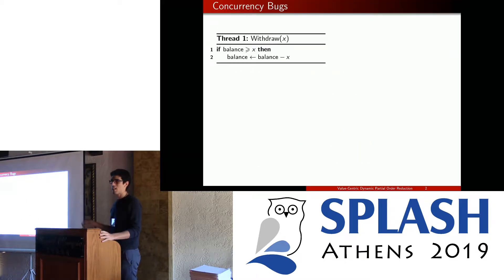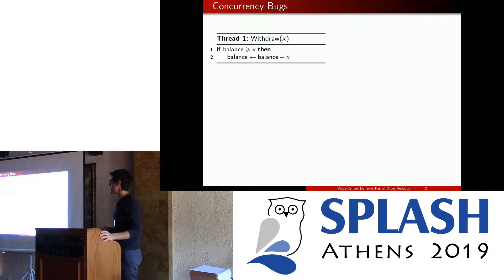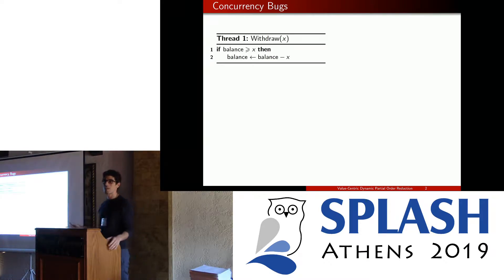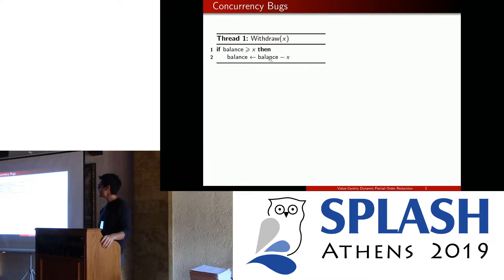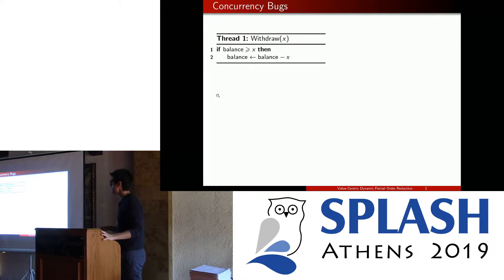Let's say you're keeping track of the balance in your bank account and you want to implement a function for withdrawing a certain amount x. This is more or less the code you would write: first you check whether the balance is enough to support the withdrawal, and then you update it with the remaining amount. This is a fine piece of code in a sequential setting, but not in a concurrent one.